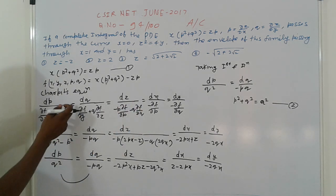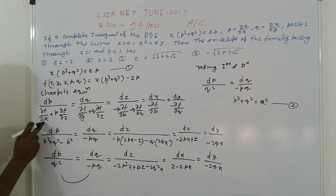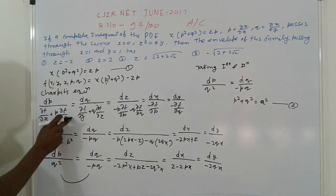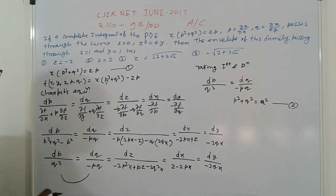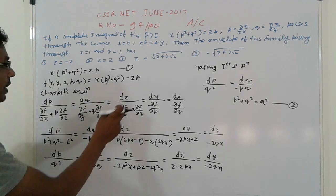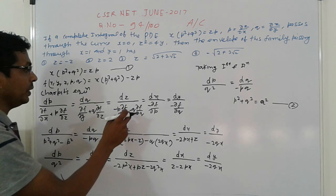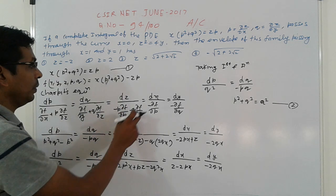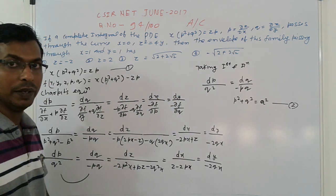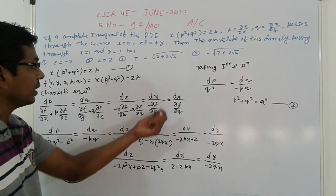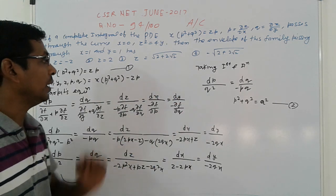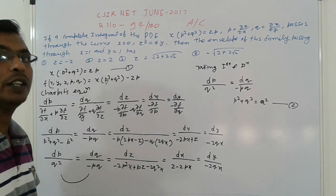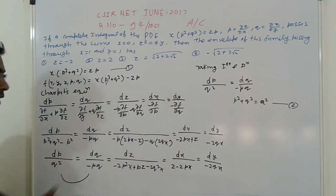The Charpit equations are: dp upon (del f/del x + p · del f/del z) = dq upon (del f/del y + q · del f/del z) = dz upon (−p · del f/del p − q · del f/del q) = dx upon (−del f/del p) = dy upon (del f/del q). That is the Charpit method.